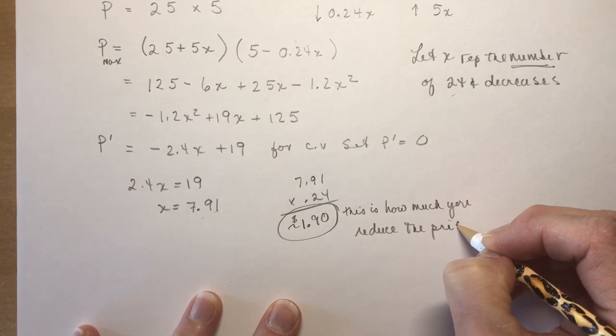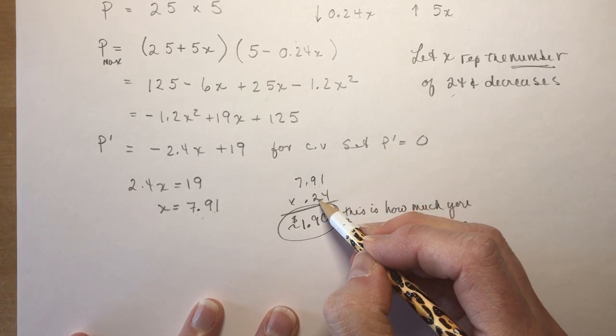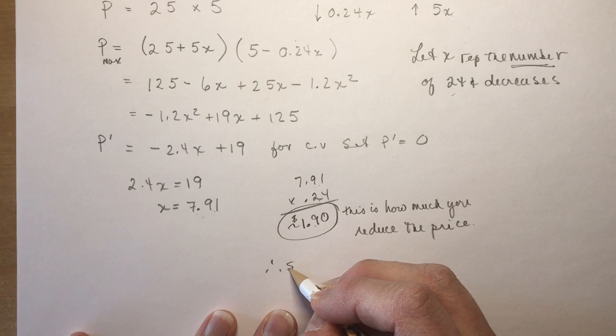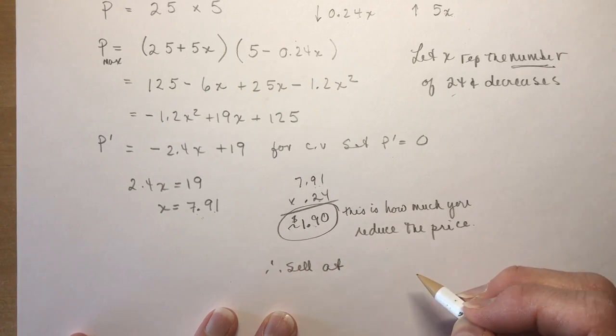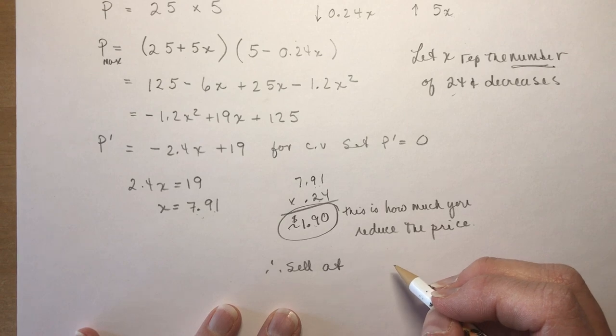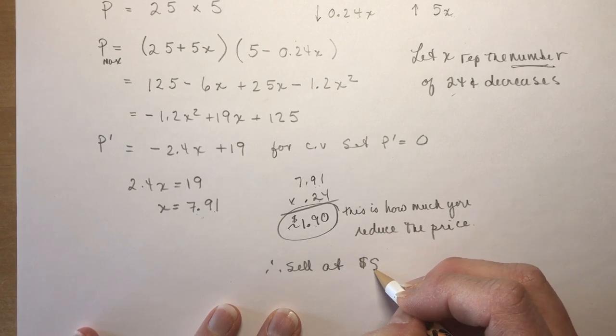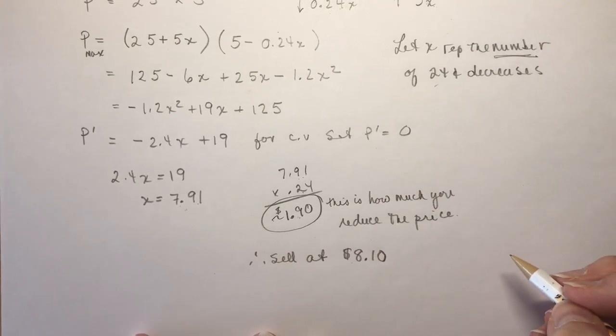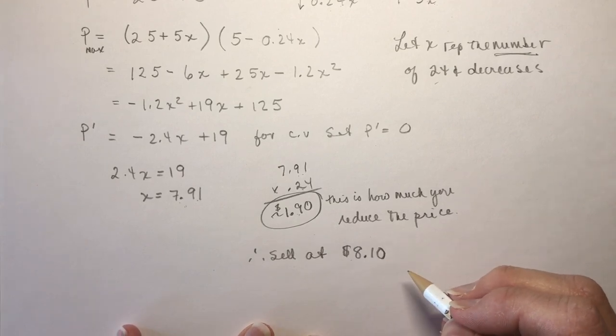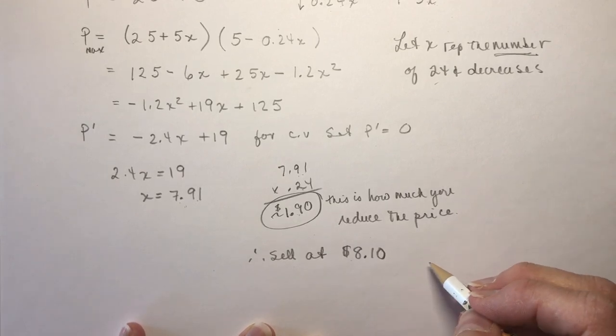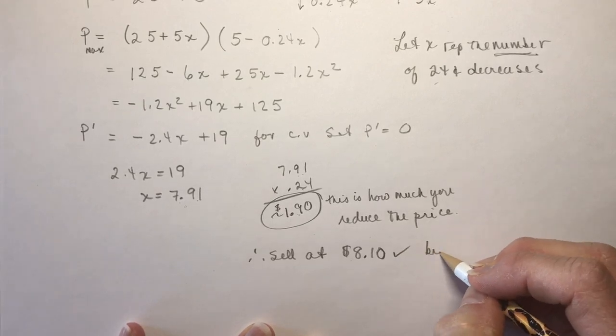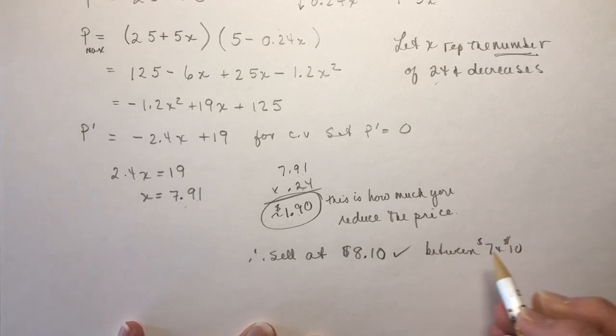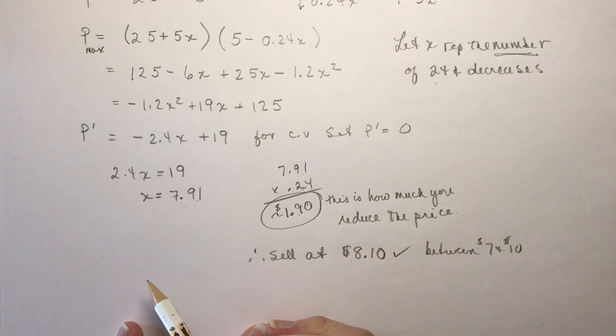Okay, so it was 7.91 decreases of 24 cents. So if I reduce the price by a dollar ninety, sell at 10 minus a dollar ninety - that's eight dollars and ten cents. Eight dollars and ten cents. Okay, and that fits with that gobbledygook at the end of the question that said it had to remain between seven and ten dollars. Yes, we're between seven and ten dollars, and I really didn't have to pay any attention to that at all because I only had one solution to choose from.